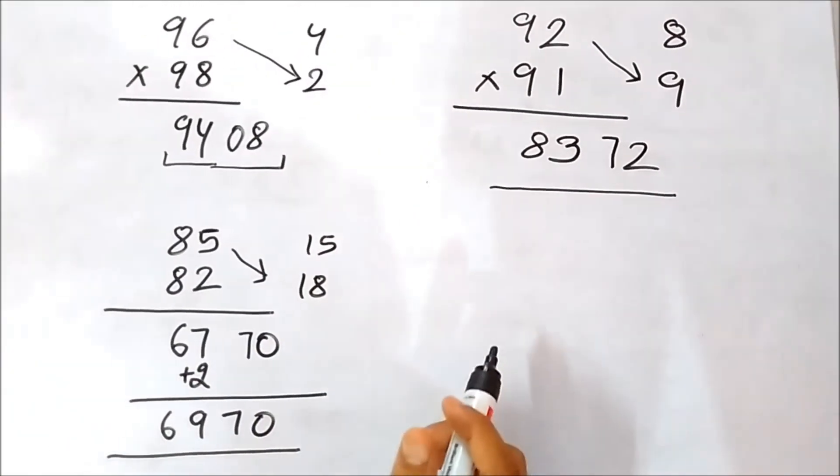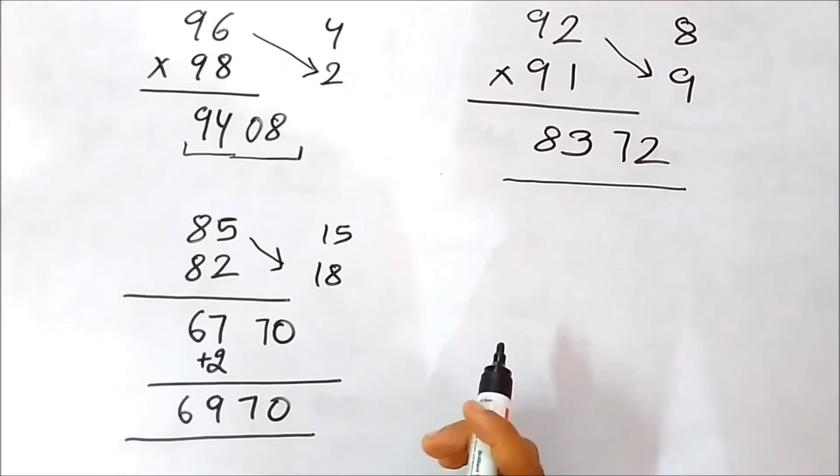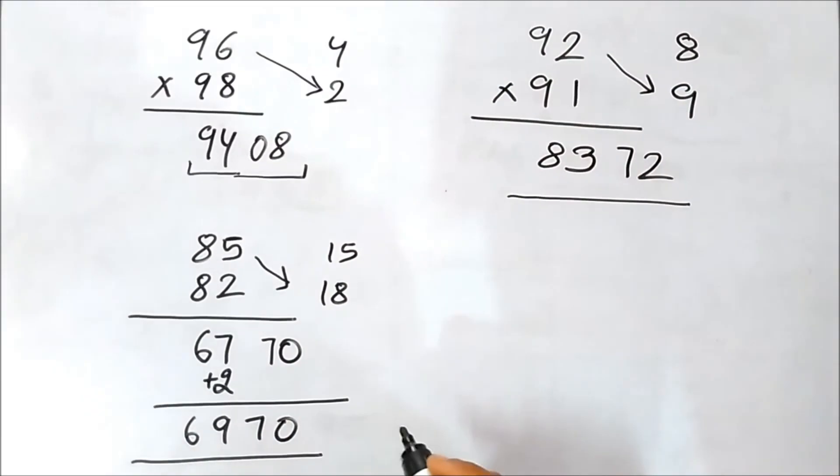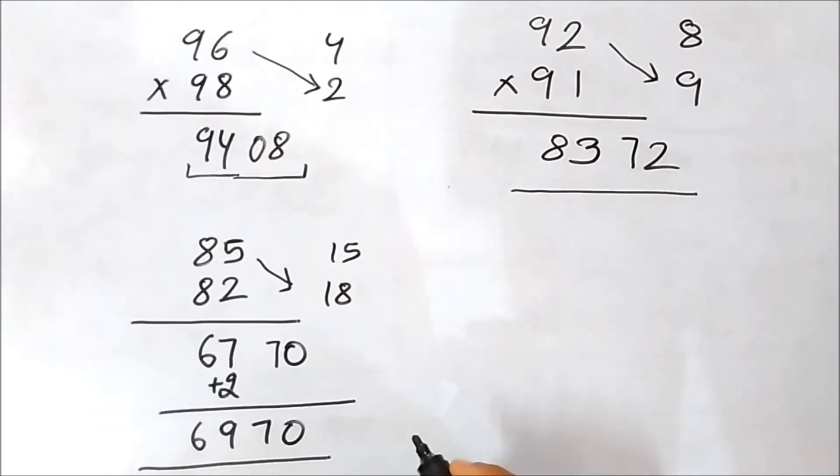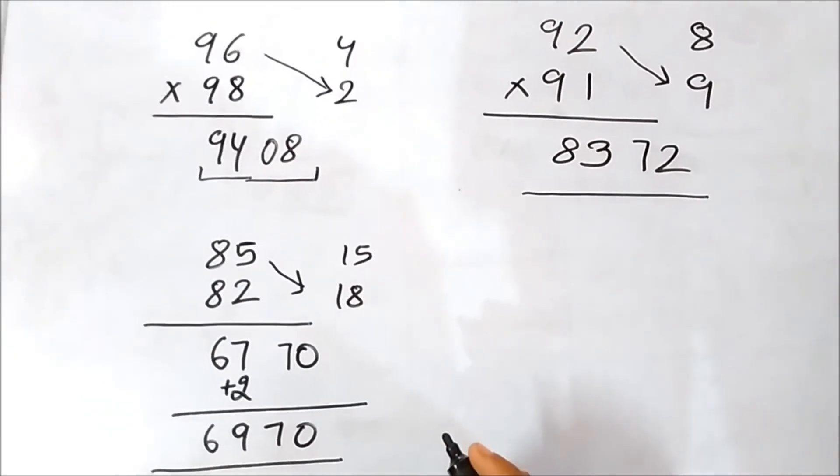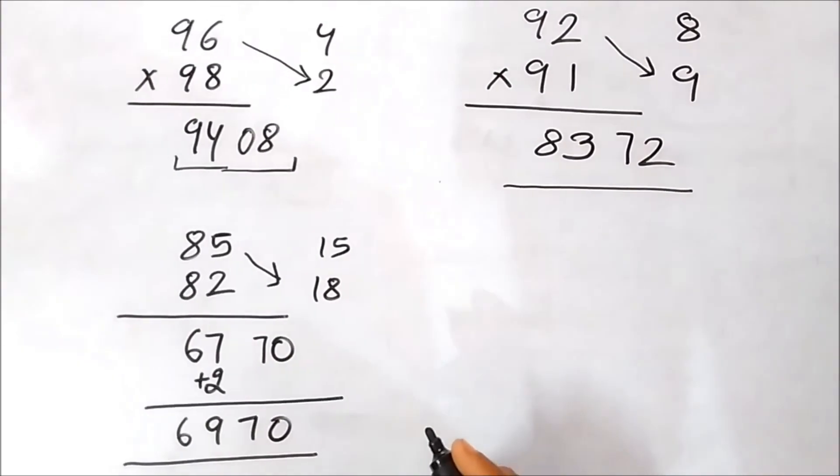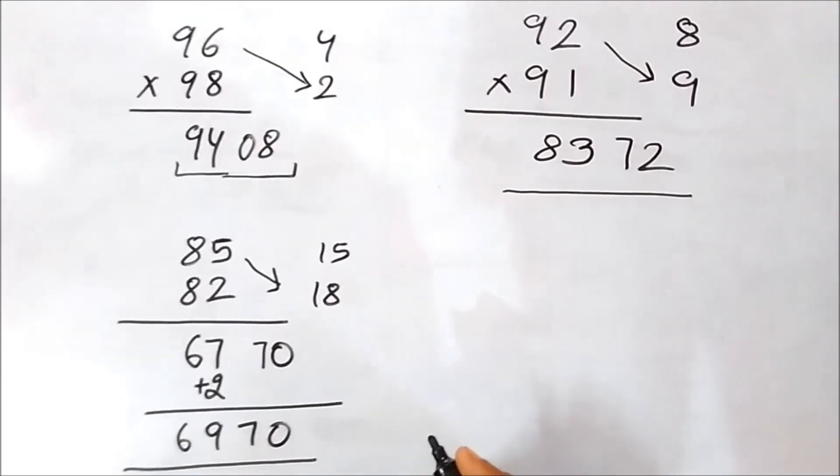So this is one of the fastest calculation tricks for multiplication of those two digit numbers which are nearer to 100. So if you like this video and if you want more videos like this, please like this video and subscribe our channel, Learning Simplified. Thank you so much.